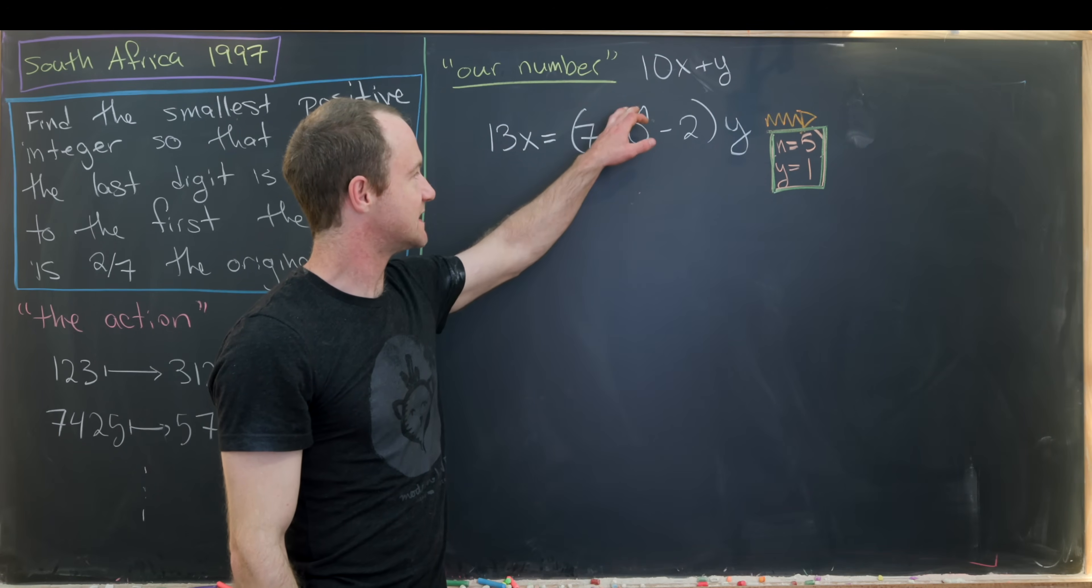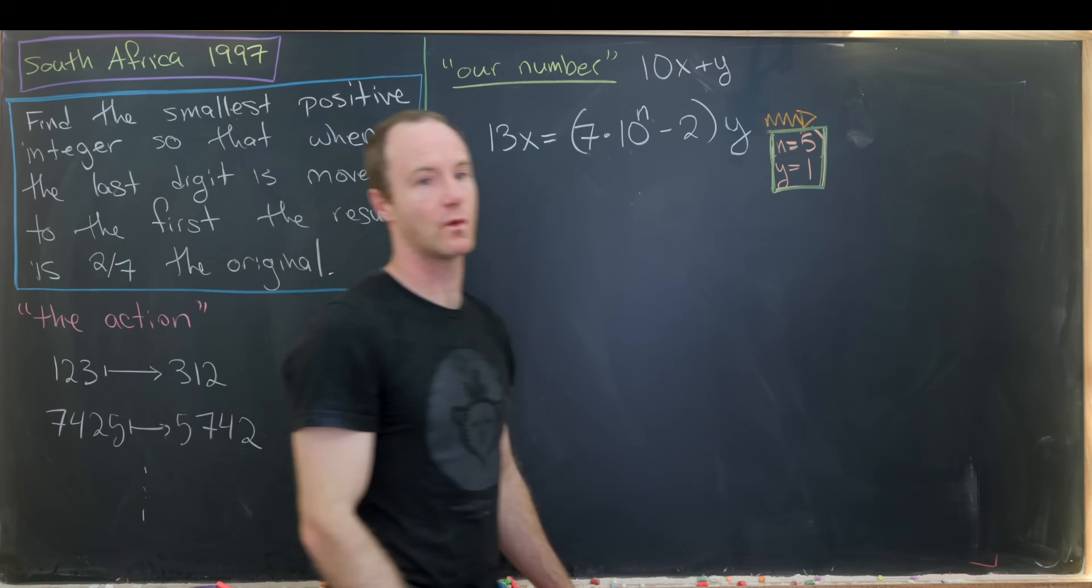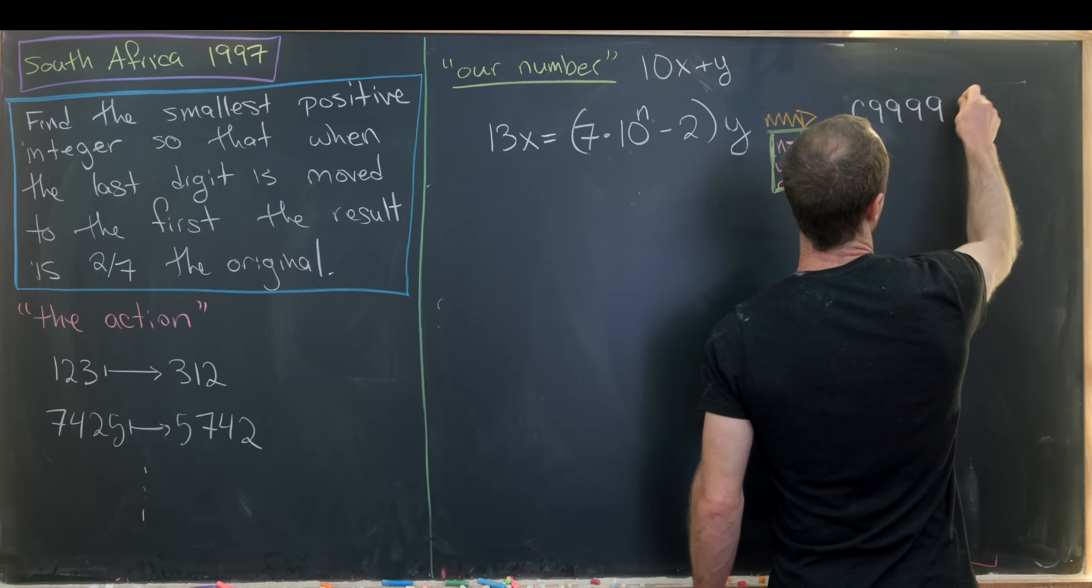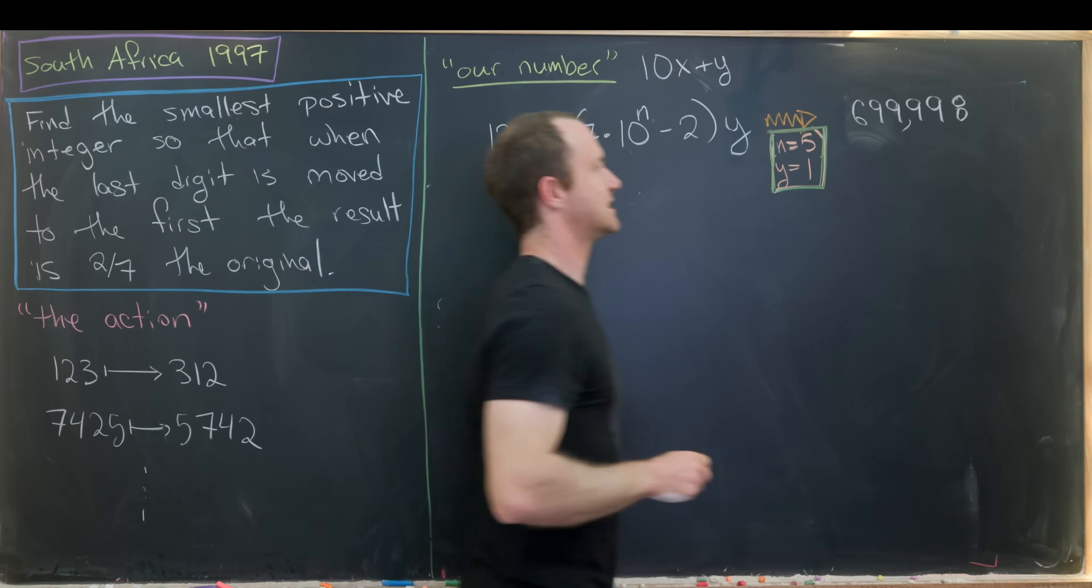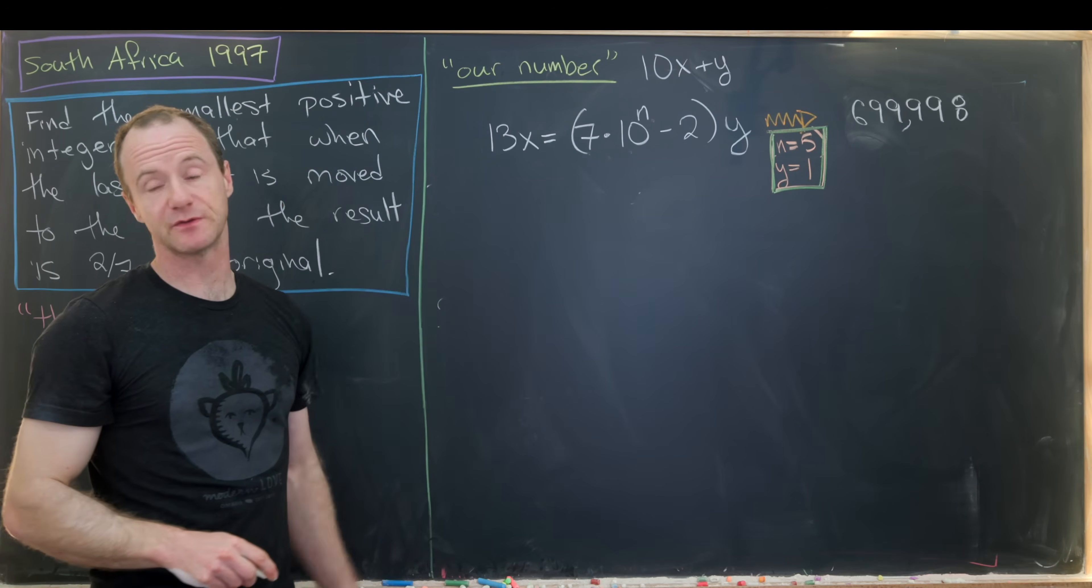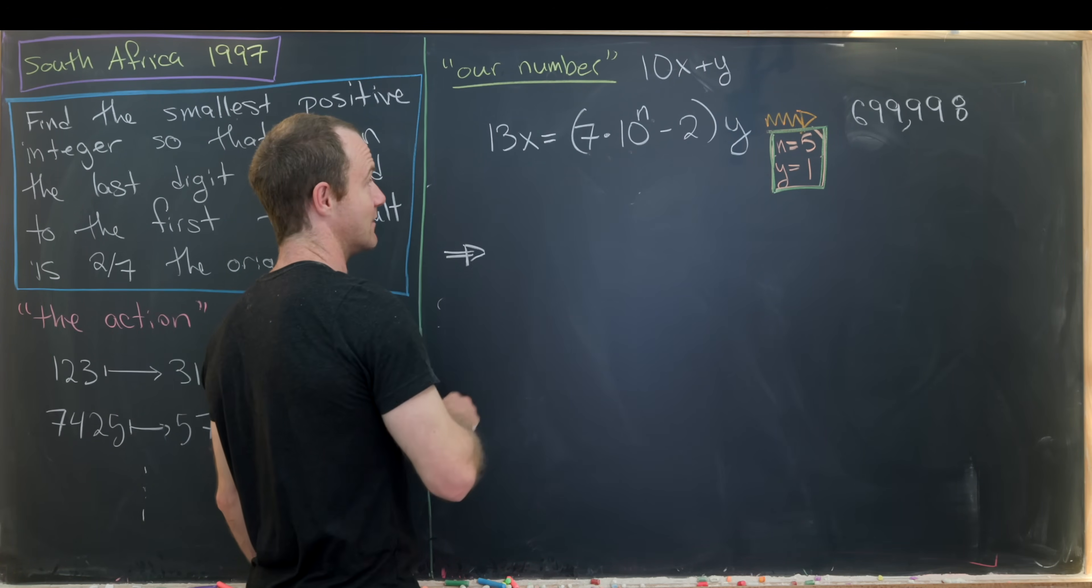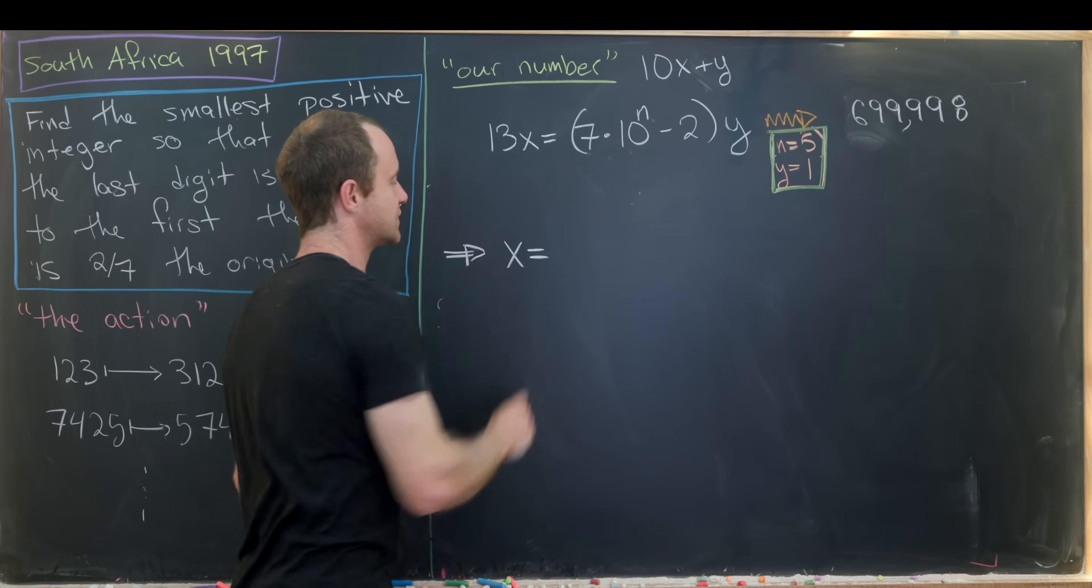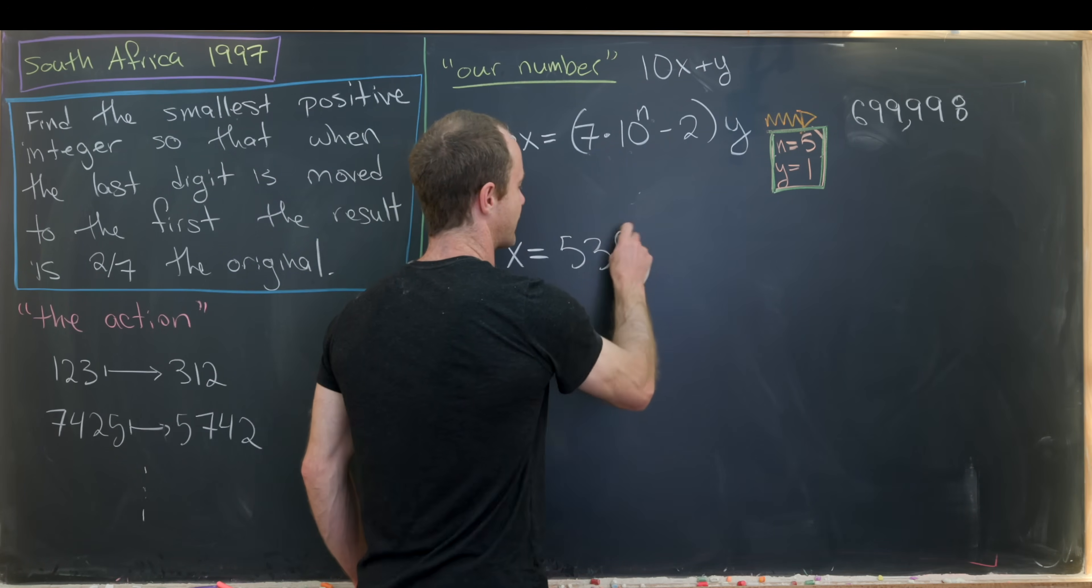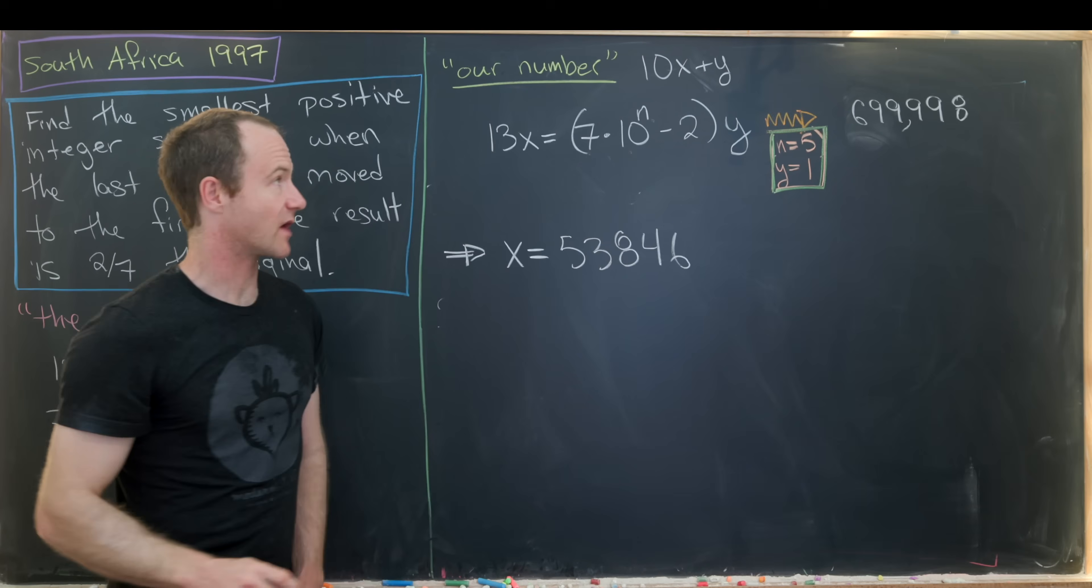So we'll have 7 times 10 to the 5 minus 2 times 1. So that means we can essentially disregard the y. So that'll give us something like 6, 9, 9, 9, 9, 8. So that's the number that we're going for right here. And we know that this number is divisible by 13 by our construction. So that means our number x will be that number divided by 13. So I'll spare you the details of working that out. But what you get is 5, 3, 8, 4, 6. So that's our number x.